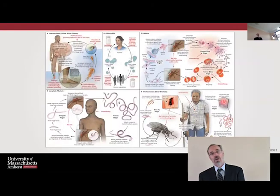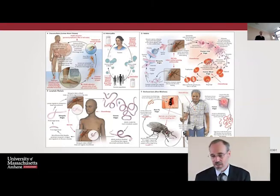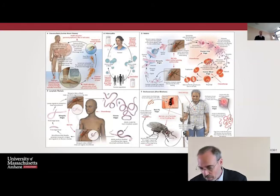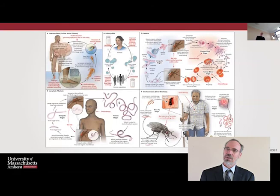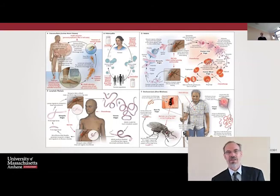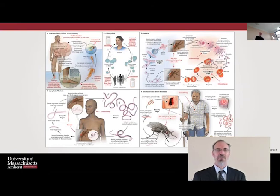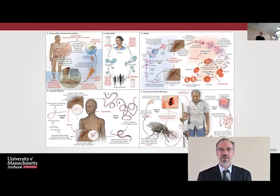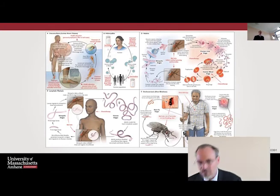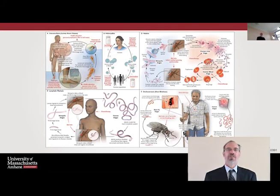Right now there are only a few diseases that look like candidates for eradication: guinea worm, polio, lymphatic filariasis, malaria — which is on the elimination agenda though eradication is uncertain — and river blindness. We're going to talk about those when we discuss tropical diseases.